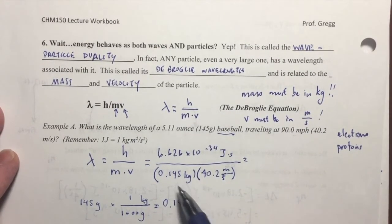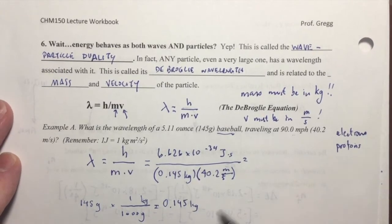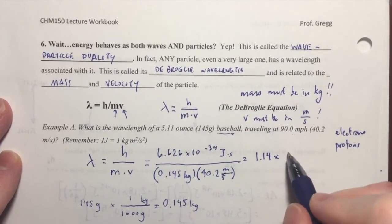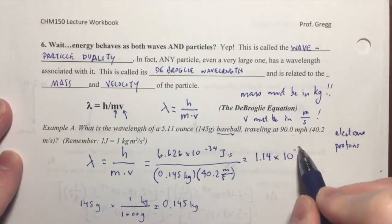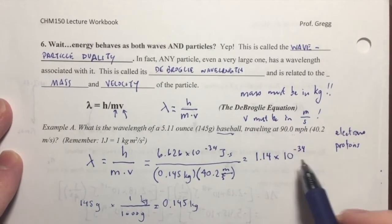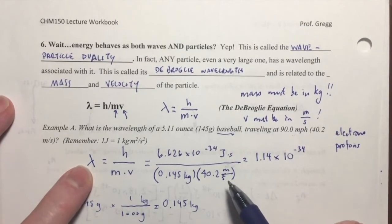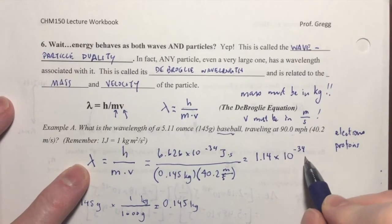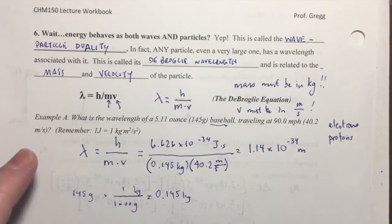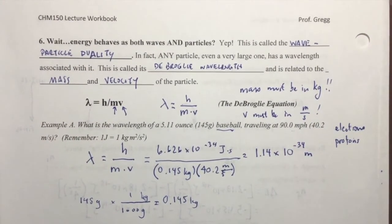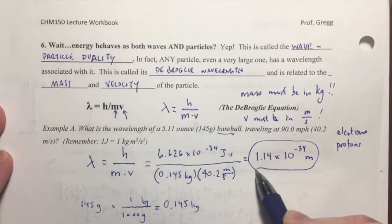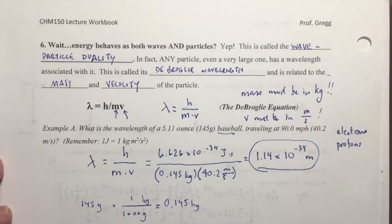Rounded to 3 sig figs, which is 1.14 times 10 to the negative 34th. My units are going to, it's a wavelength. So the length here is in meters. And I'll show you how the units give me that here in just a moment. But I want to make sure that we've got the right answer here.